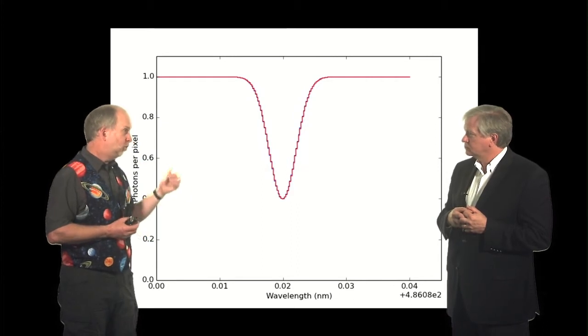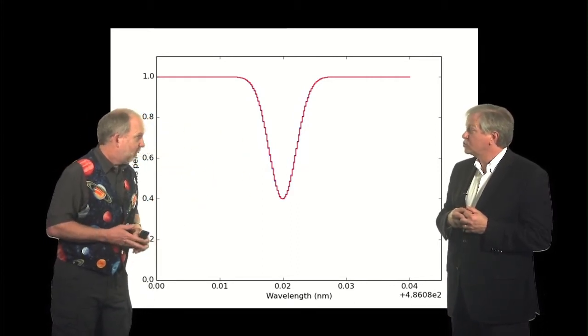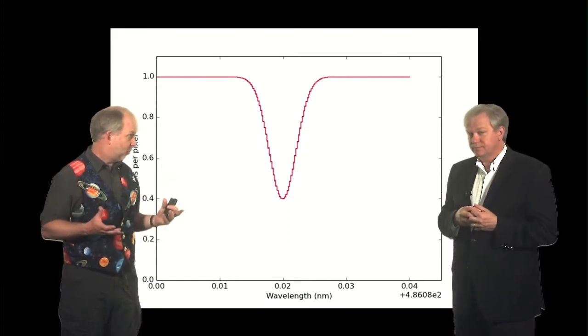A second advantage is you don't just have one absorption line of the star, you get thousands of the things. Oh, so you can average over many thousands. So that gives you a big advantage.